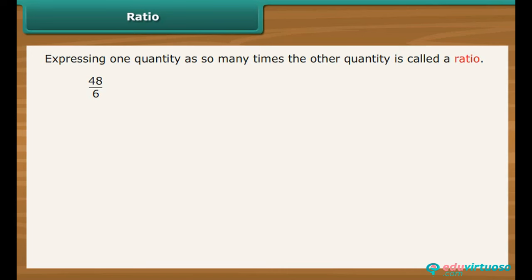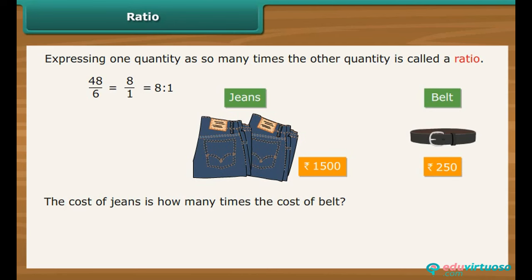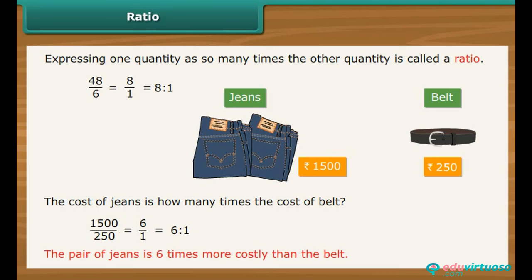48 divided by 6 is 8 divided by 1, which can also be written as 8 is to 1. Colon is the symbol used to denote ratio. For another example, Tushar bought a pair of jeans for Rs. 1500 and a belt for Rs. 250. To calculate the ratio, divide 1500 by 250, which is the same as 6 divided by 1, expressed as 6 is to 1. Therefore, the pair of jeans is 6 times more costly than the belt.